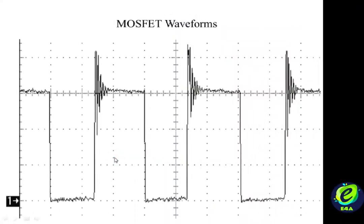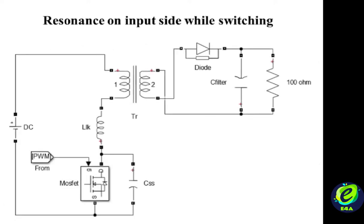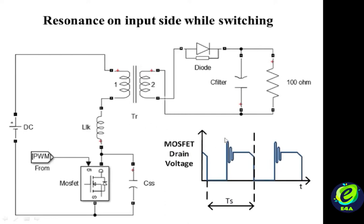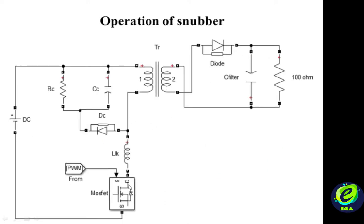In the previous videos, we have seen that voltage spikes or ringing voltage gets induced on the drain of the MOSFET, which is due to the reflected voltage and the transformer's leakage inductance. We saw the significance of a snubber circuit in averting these high voltages from the MOSFET's drain, which can harm the MOSFET switch. We also understood the operation of the RCD-based snubber circuit as well as its design.